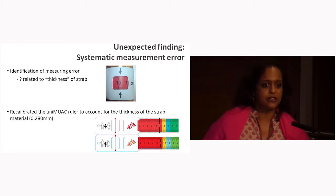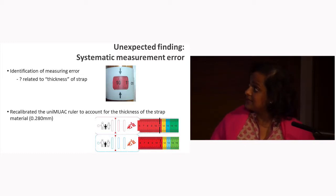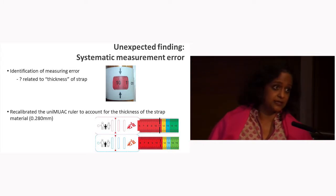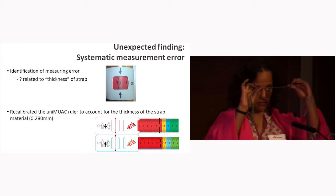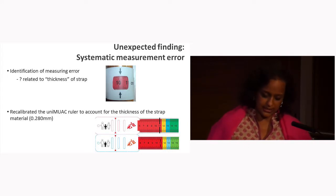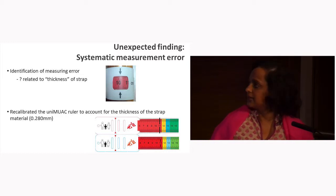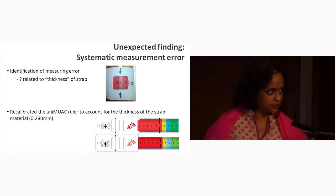However, when we printed our prototype version, we discovered a measuring error in the ruler of our uni-MUAC strap, as well as in what we were using as the gold standard, which is the UNICEF MUAC strap. That's supposed to be a 10-centimetre circumference, and you can tell that it clearly is not measuring that. We hypothesized that this difference was actually due to the thickness of the strap material. So we recalibrated the ruler on the strap to account for this thickness, and you can see the two straps here — it's a very subtle difference, but they've been recalibrated.